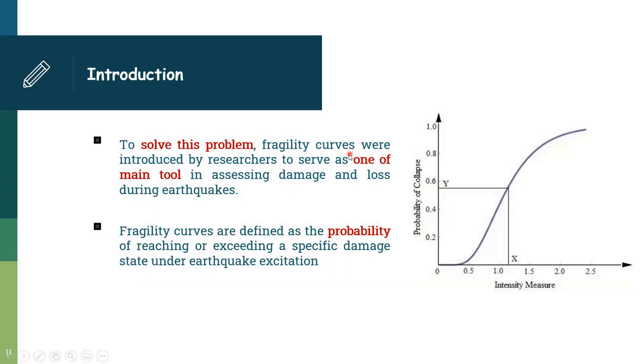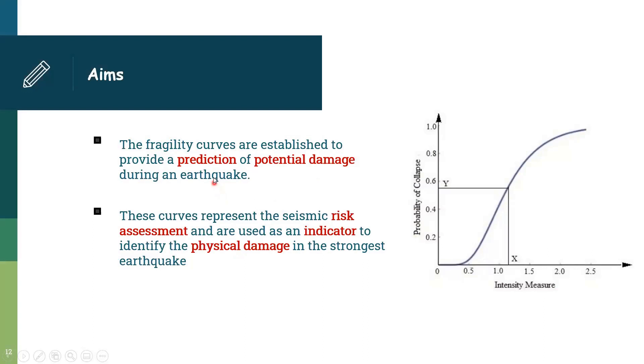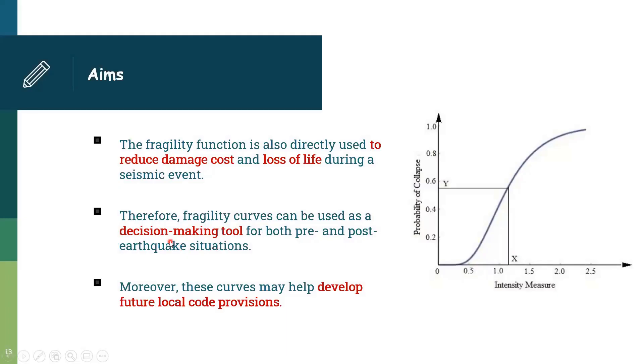To solve this problem we need to develop the fragility curve. The fragility curve were done by researchers to serve as one of the main tools in assessing damage and loss during earthquake. This is a curve showing the relation between the probability of collapse and the intensity measure. The fragility curve is defined as the probability of reaching a specific damage state. The fragility curve's aim is prediction of potential damage, indication for physical damage, to help with decision making before and after earthquake, reduce damage cost and lost life, and help develop future code standard provisions in the earthquake field.